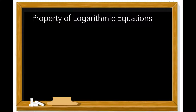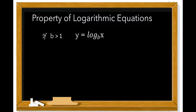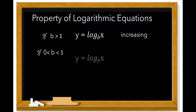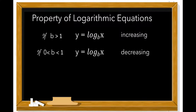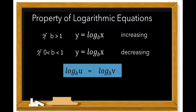Property of logarithmic equations: If b is greater than 1, then the logarithmic function y = log base b of x is increasing for all x. But if b is less than 1 but greater than 0, then the logarithmic function y = log base b of x is decreasing for all x. This means that log base b of u equals log base b of v if and only if u equals v.